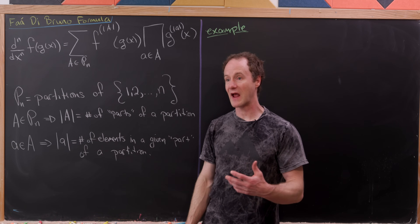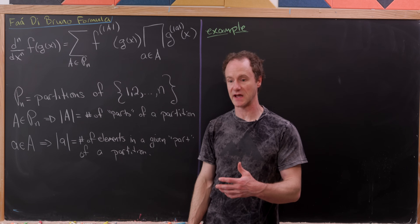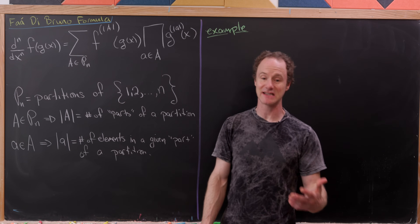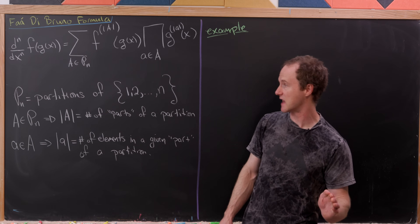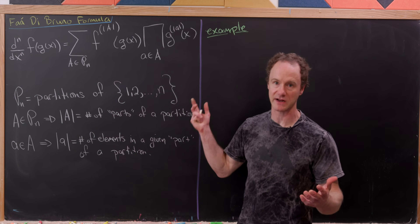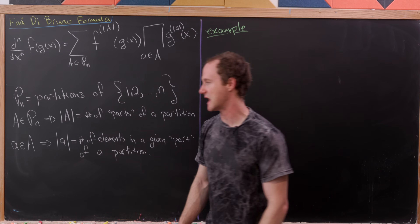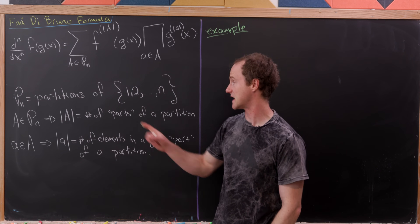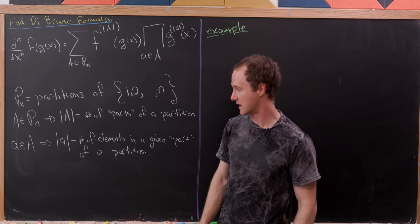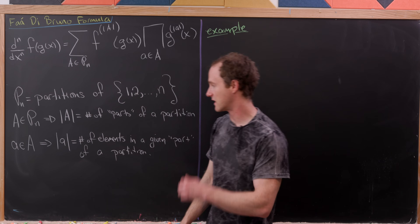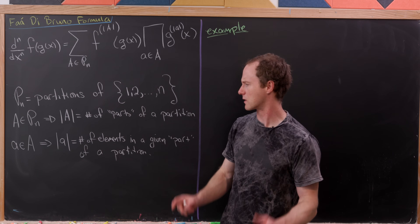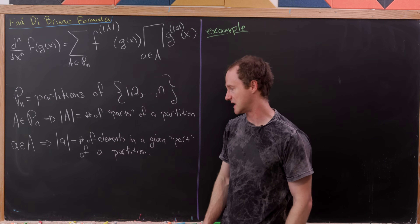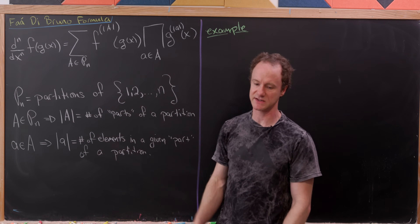Remember, A itself is a set of subsets. So if we take an element from A, it is itself a single subset of our parent set. So little a inside of big A is a subset of {1,...,n}, and the cardinality of little a is just the number of elements in that given subset.